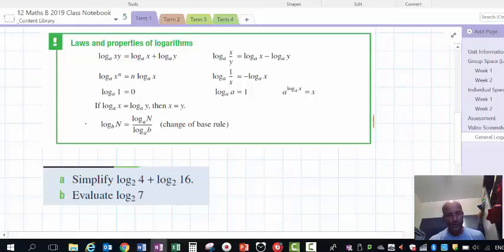I'd like to highlight the change of base rule, which you may not have seen before. It's a handy one. If you look at how it's formed, log of n to base b can be expressed as log of n to base a over log of b to base a. So the n's are corresponding and the b's are corresponding. What is a? Well, a is some other suitable value for the base. It doesn't matter what a is, as long as it's the same top and bottom. So it is a handy rule.